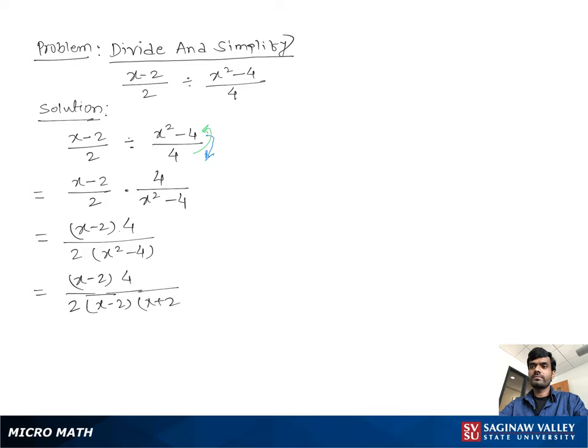Now we see (x-2) cancels out. 4 divided by 2 leaves 2 in the numerator. So we get 2/(x+2) where x ≠ 2.